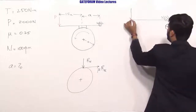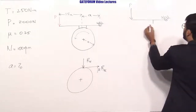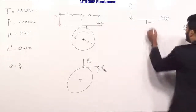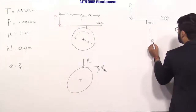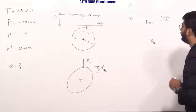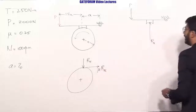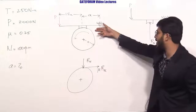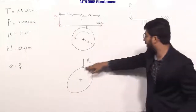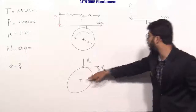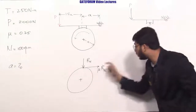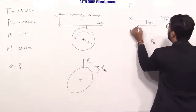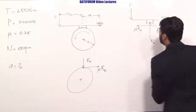Coming to the FBD of the lever: the active force P is applied. There will be a normal reaction R_n. The friction force will be opposite to this. When reversing the direction of R_n for the lever, the friction force μR_n must also be reversed accordingly.